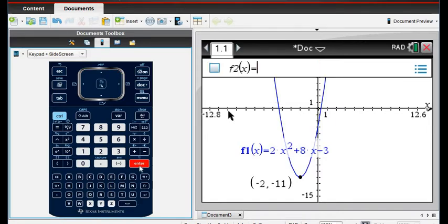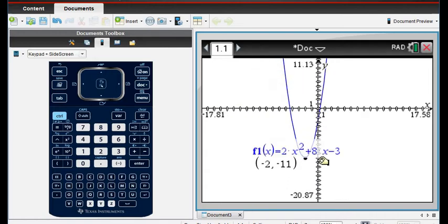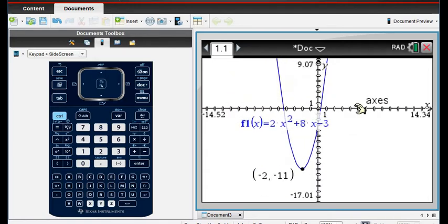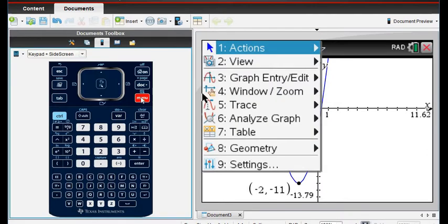And then after we graphed it, remember that we adjusted the window. Under the window, you can either grab... It doesn't want to highlight now. So we can either grab the axes to make it to where we can see it. You can adjust it that way. You can also adjust the x-axis, move it in or out. So that is one option. Or you can go to the menu and go to the window zoom, which is option 4, and adjust the windows.